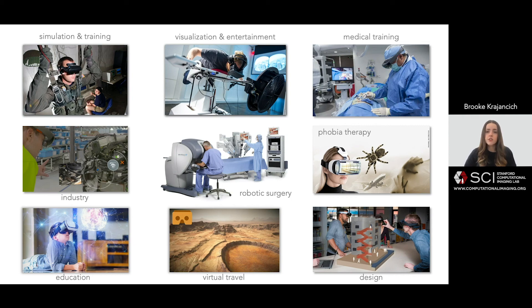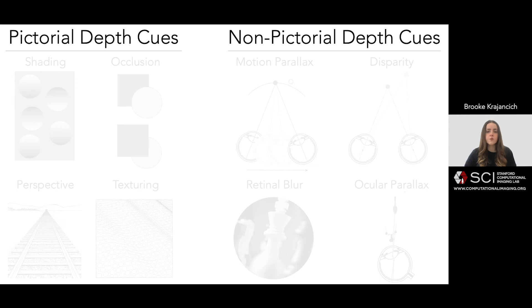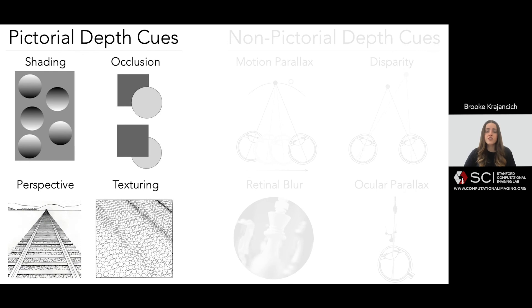Taking a look at some of these cues, we can loosely categorize them into two bins: pictorial and non-pictorial cues. Pictorial cues are those that we can extract from a 2D image that give us some information about the underlying 3D structure it is portraying.